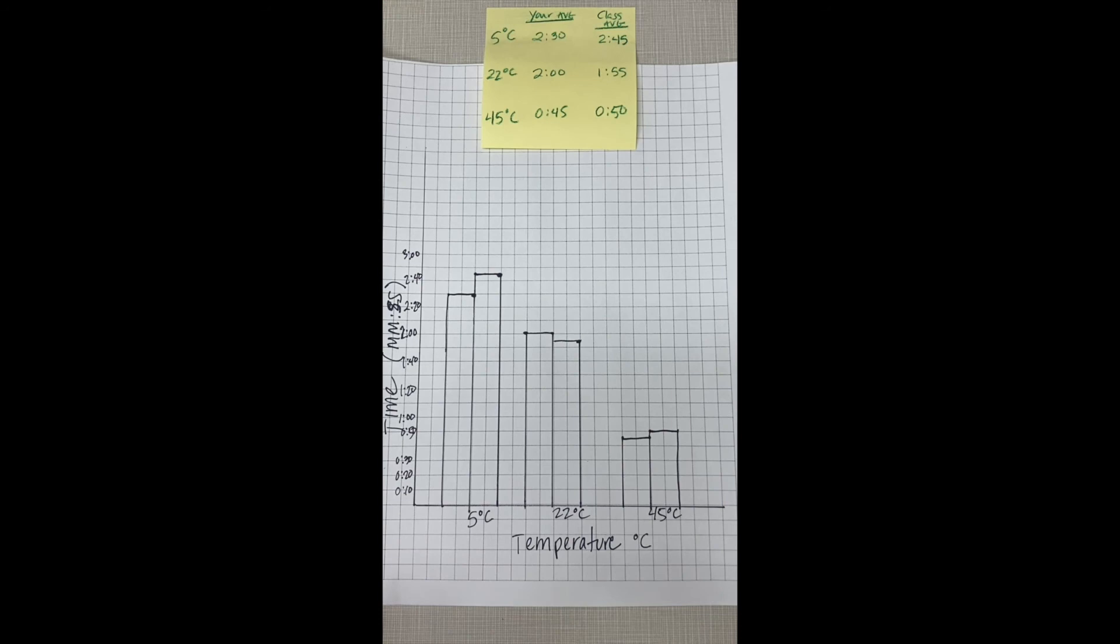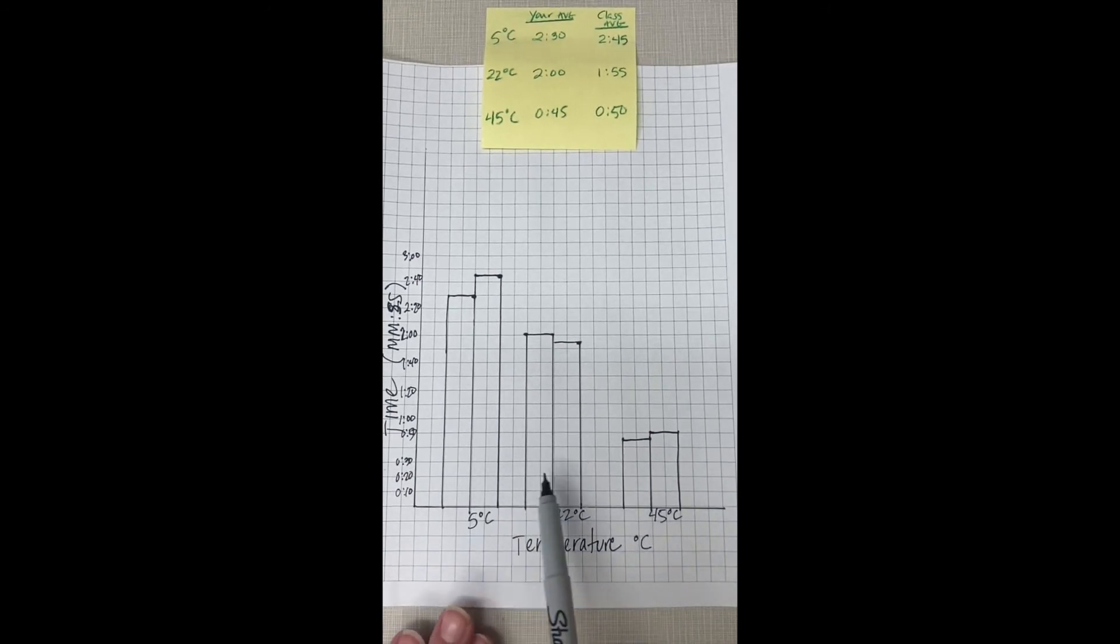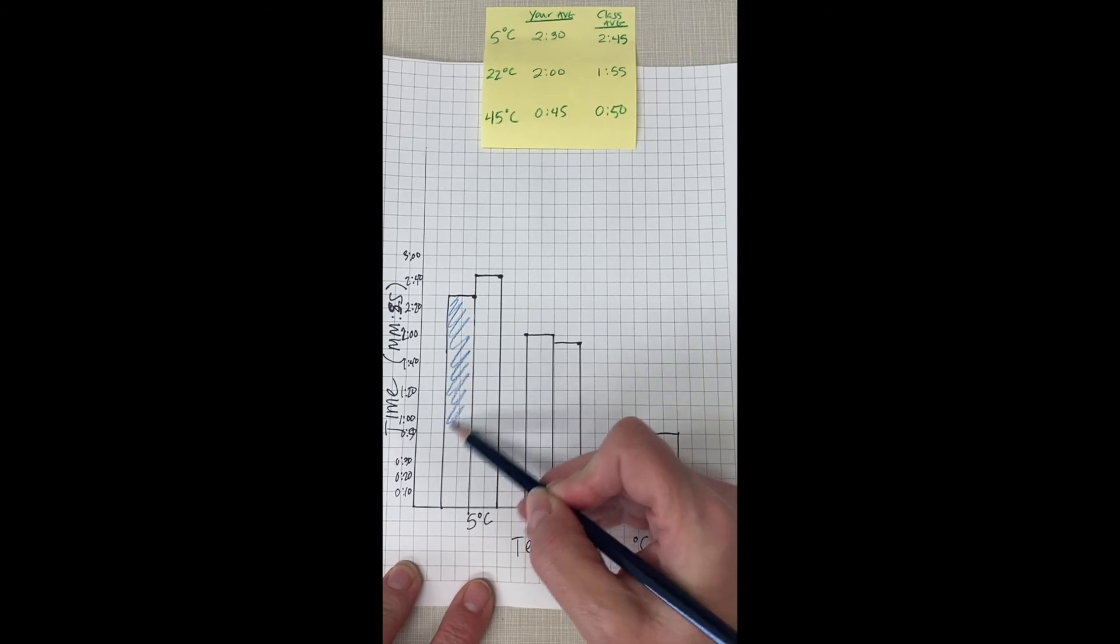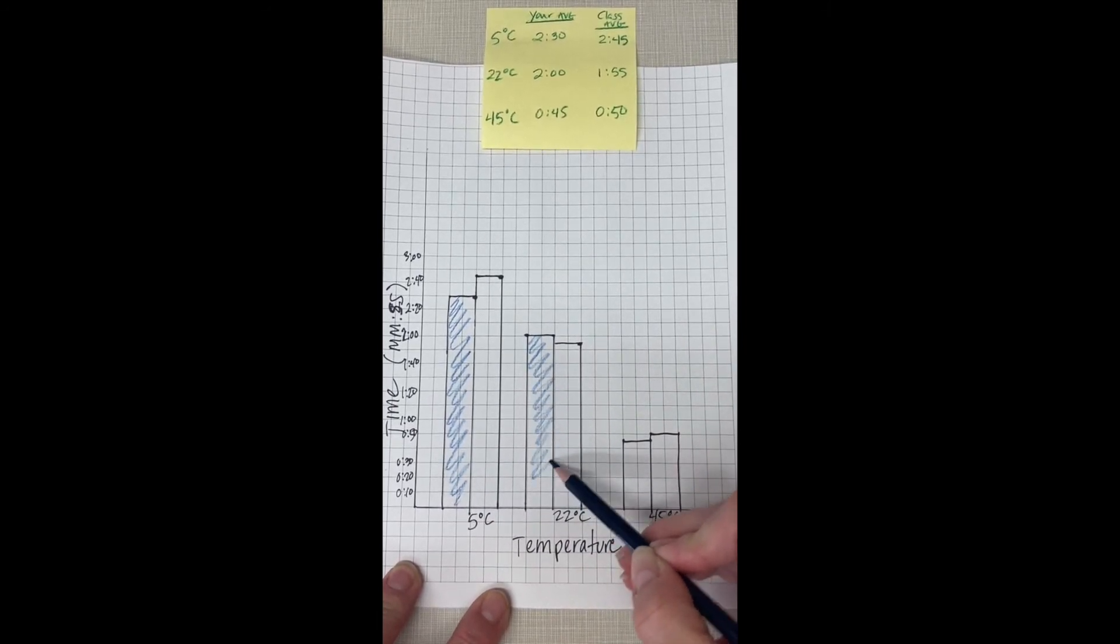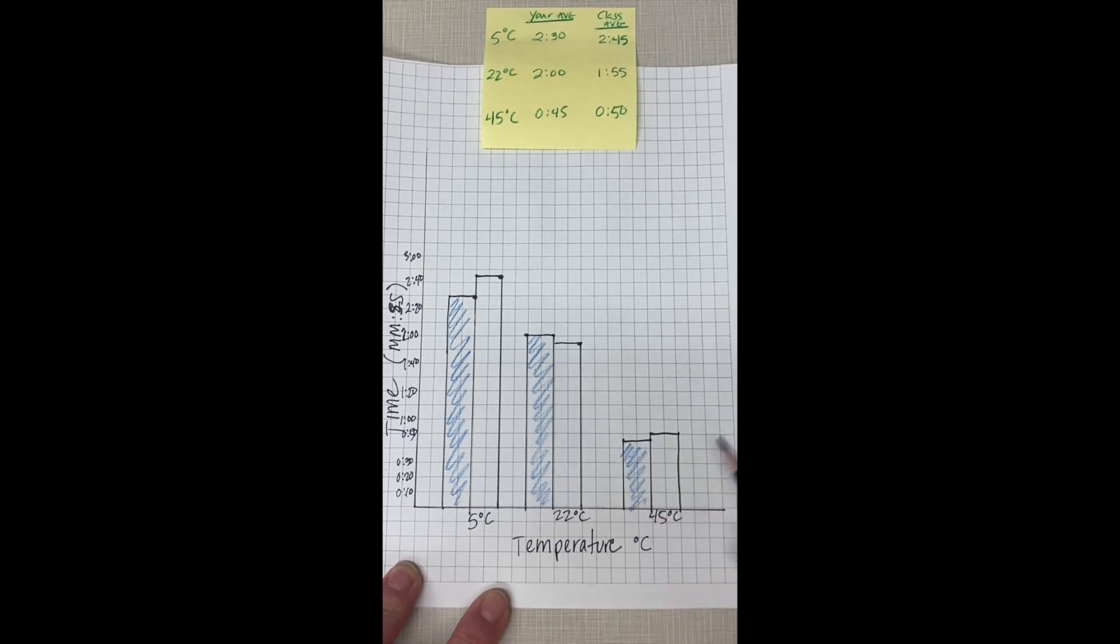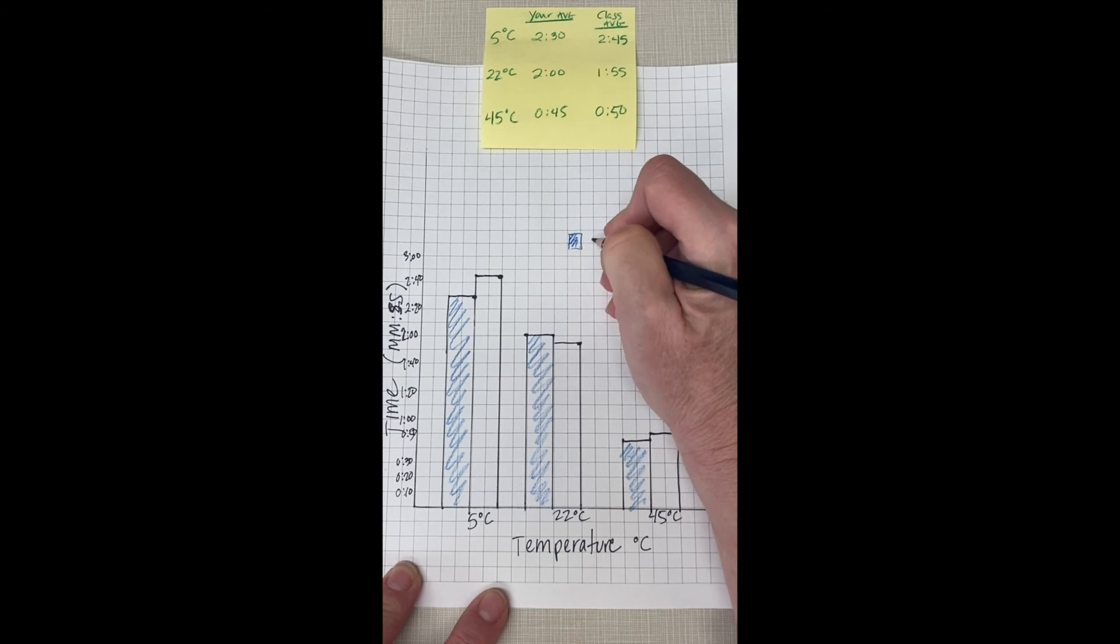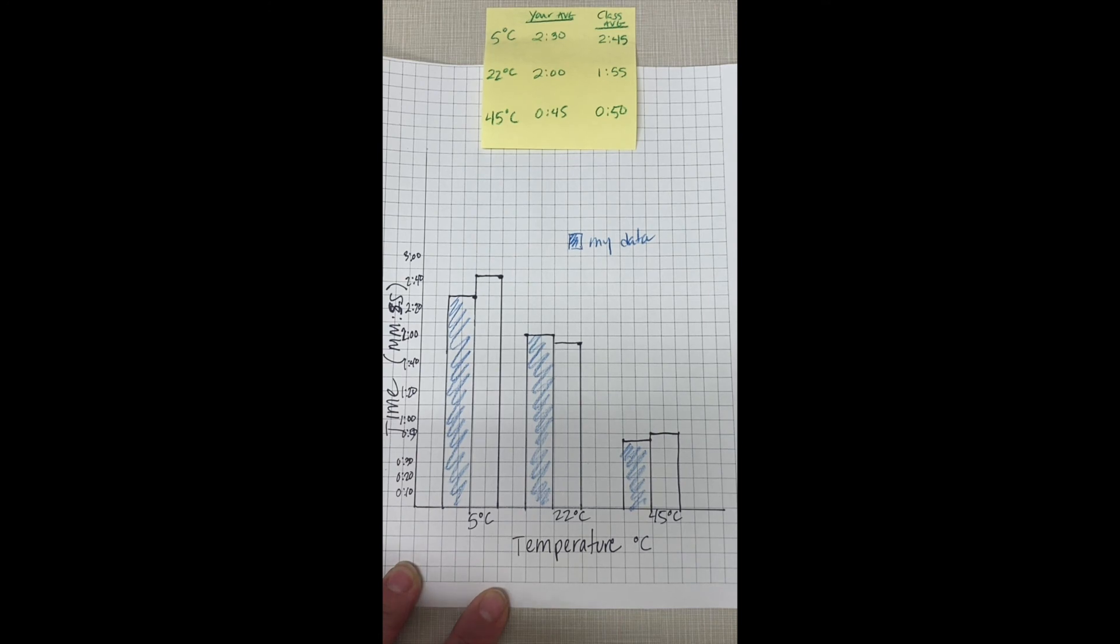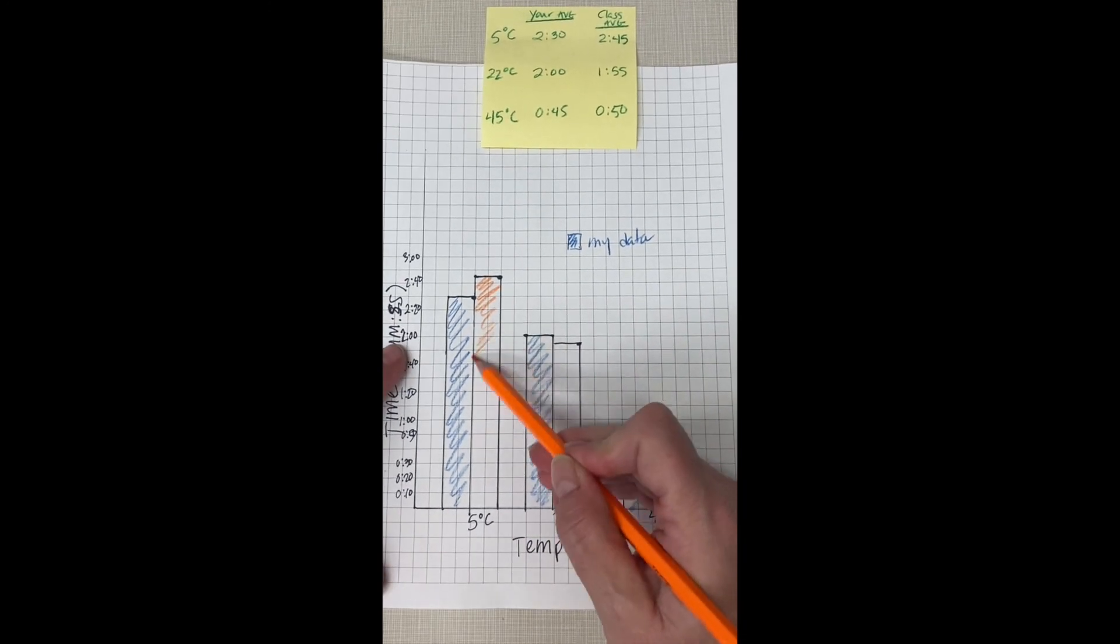So I'm telling you verbally that these are your data and these ones are for the class average, but when you're doing a graph, you should have a key. So you can shade them in. I'm just doing this really quickly. You should always make things pleasant to look at, something easy to read. So you can just make a little key right here that says, this is my data. And then you can pick another color and do this one for the class average.